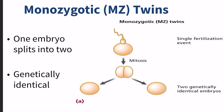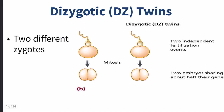Twin studies can help us figure out if a trait is genetic or not. First off, there are two types of twins. Monozygotic twins are called mono because they come from one embryo — one sperm and one egg. One embryo splits into two at the very beginning, and those end up being two separate but genetically identical embryos. These are identical twins. The second type are dizygotic twins, and the word 'di' stands for two.